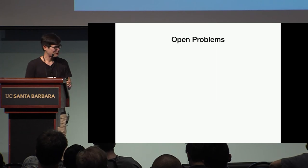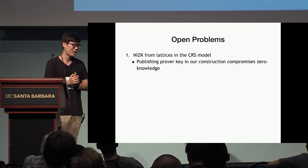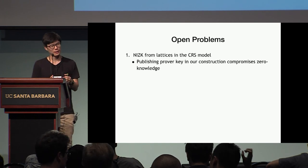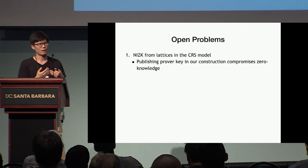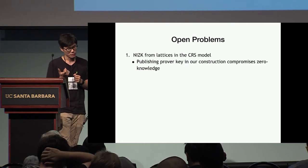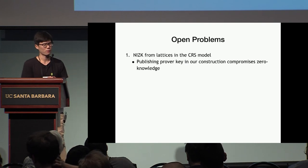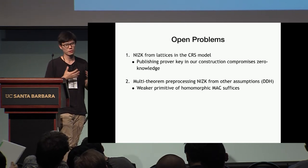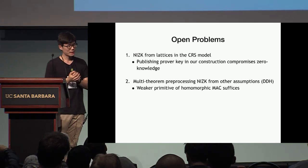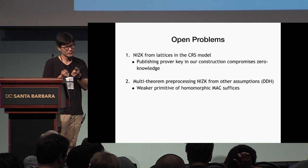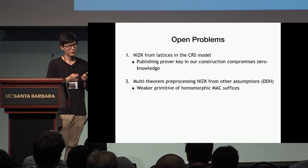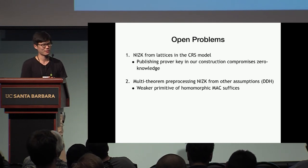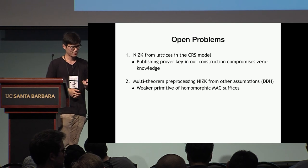Let me finish with open problems. The obvious open problem is constructing NIZK from lattices in the CRS model. Our construction doesn't extend there because if the proving key becomes public, it contains the encryption key used to encrypt the ciphertext — anyone with that key can just decrypt and read off the witness, so we lose zero-knowledge. Another nice open problem is to get multi-theorem pre-processing NIZK from other assumptions like DDH; for this, a weaker notion called morphing MACs suffices if you don't need a designated prover NIZK. Some groups are already working on this, which is great. Thank you very much.